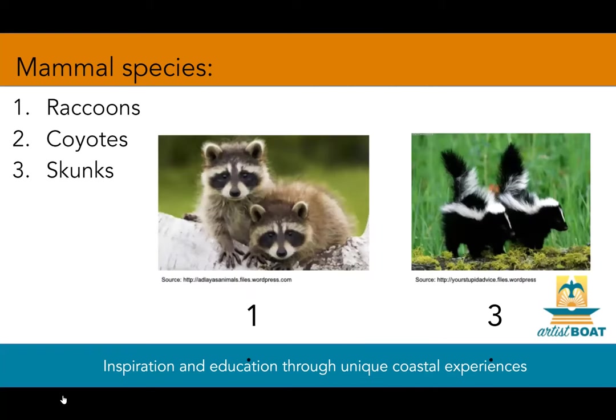Looking at some of the mammal species — while often seen as a nuisance, skunks and raccoons play really important ecological roles. Raccoons play a role as a gardener: they distribute plant seeds by feeding on berries and nuts and carrying seeds around, spreading plant growth when they release their waste. Skunks are also really beneficial — they're omnivorous and eat a variety of garden pests including mice, moles, beetles, larvae, wasps, and crickets.